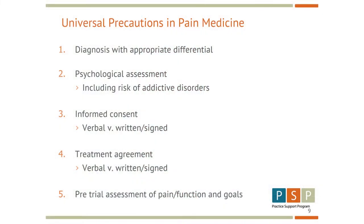All of us have heard about the universal precautions in pain medicine, and these were well published by Canadian authors some years ago. They are actually applicable for all medications, not just opioids. Obviously we have to have a diagnosis that's appropriate. The psychological assessment helps us screen for any vulnerabilities of people who may use any medication inappropriately. Ideally we want an informed consent, either verbal or written, that could be given out in the office, and in doing that we're looking to make sure that expectations between patients, clinicians, and even our pharmacists are aligned — that we're all on the same page.